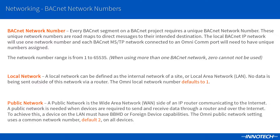A public network is a wide area network connected to the internet. Public networks allow you to send data out to other networks via a router, providing the ability to connect to a remote site or share data across sites. The default public network number is 2.